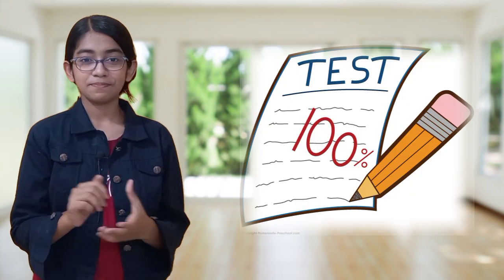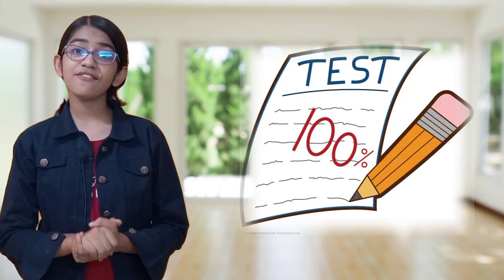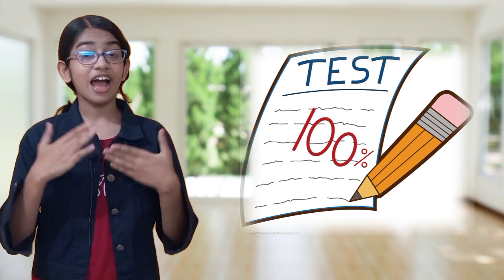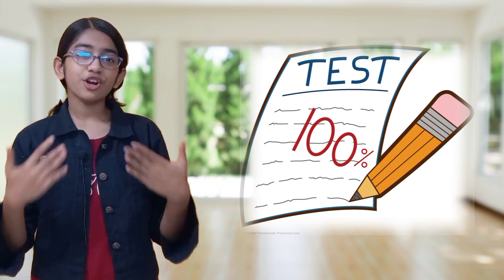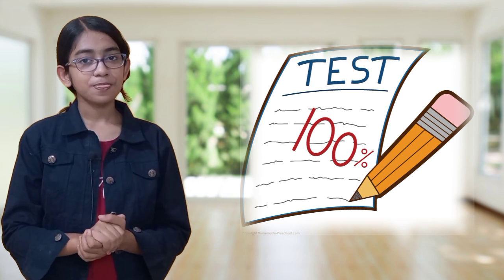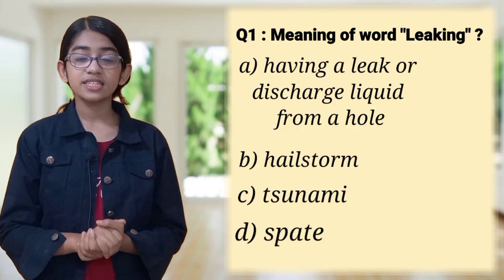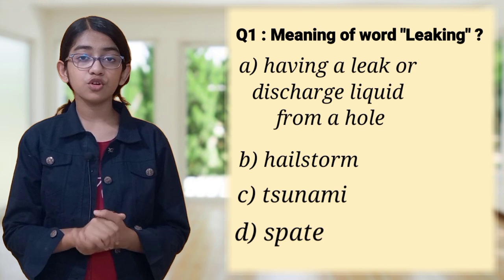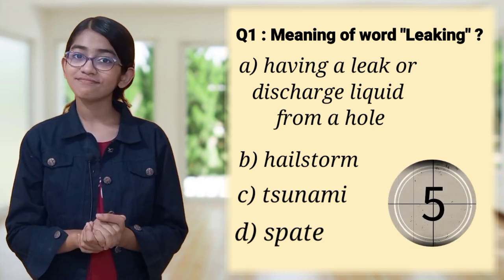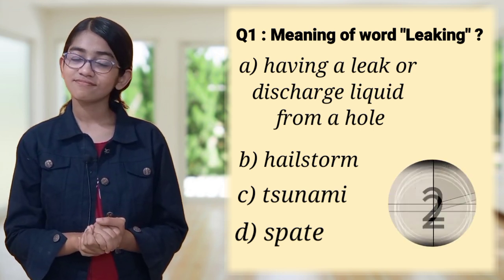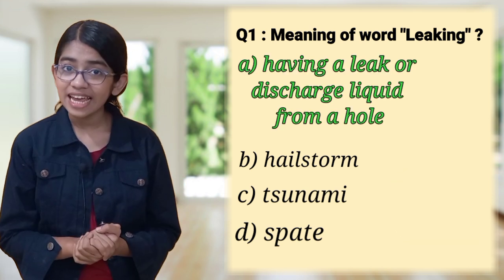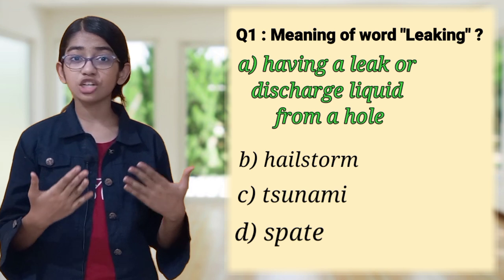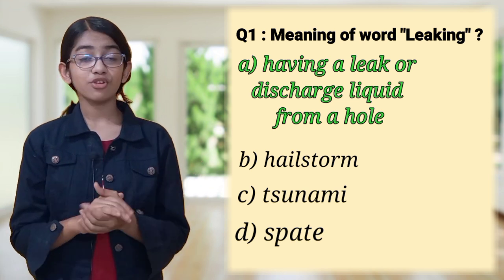Now it is test time. Five seconds will be given for each question and you have to answer it. Tell us in the comments how many correct answers did you get. The first question is, what is the meaning of the word leaking? The correct answer is A — having a leak or discharging liquid or gas from a hole.